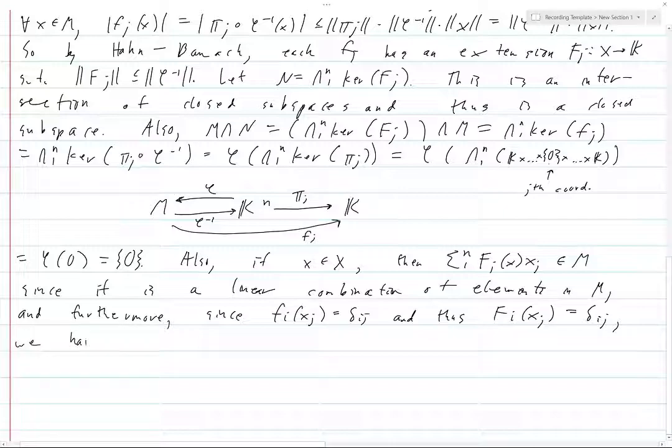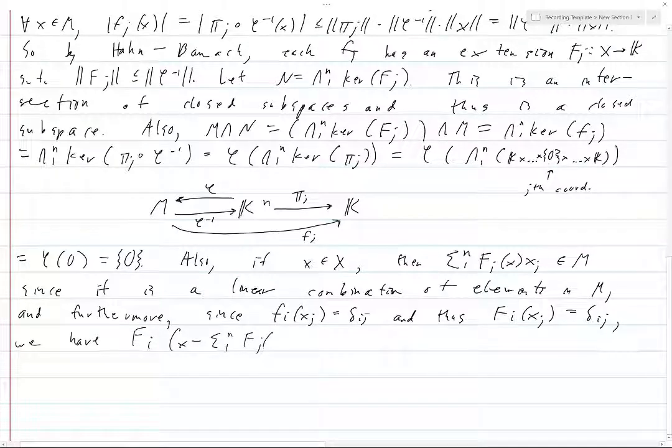And then when you extend it linearly, it's going to preserve this fact, because the xⱼ's are in M. Since this and this, furthermore, since this and this, we have Fᵢ of x minus sum from 1 to n of Fⱼ(x)xᵢ. What is this? This is just, you break it up by linearity, Fᵢ(x). So sum from 1 to n of Fⱼ(x), then Fᵢ(xⱼ).